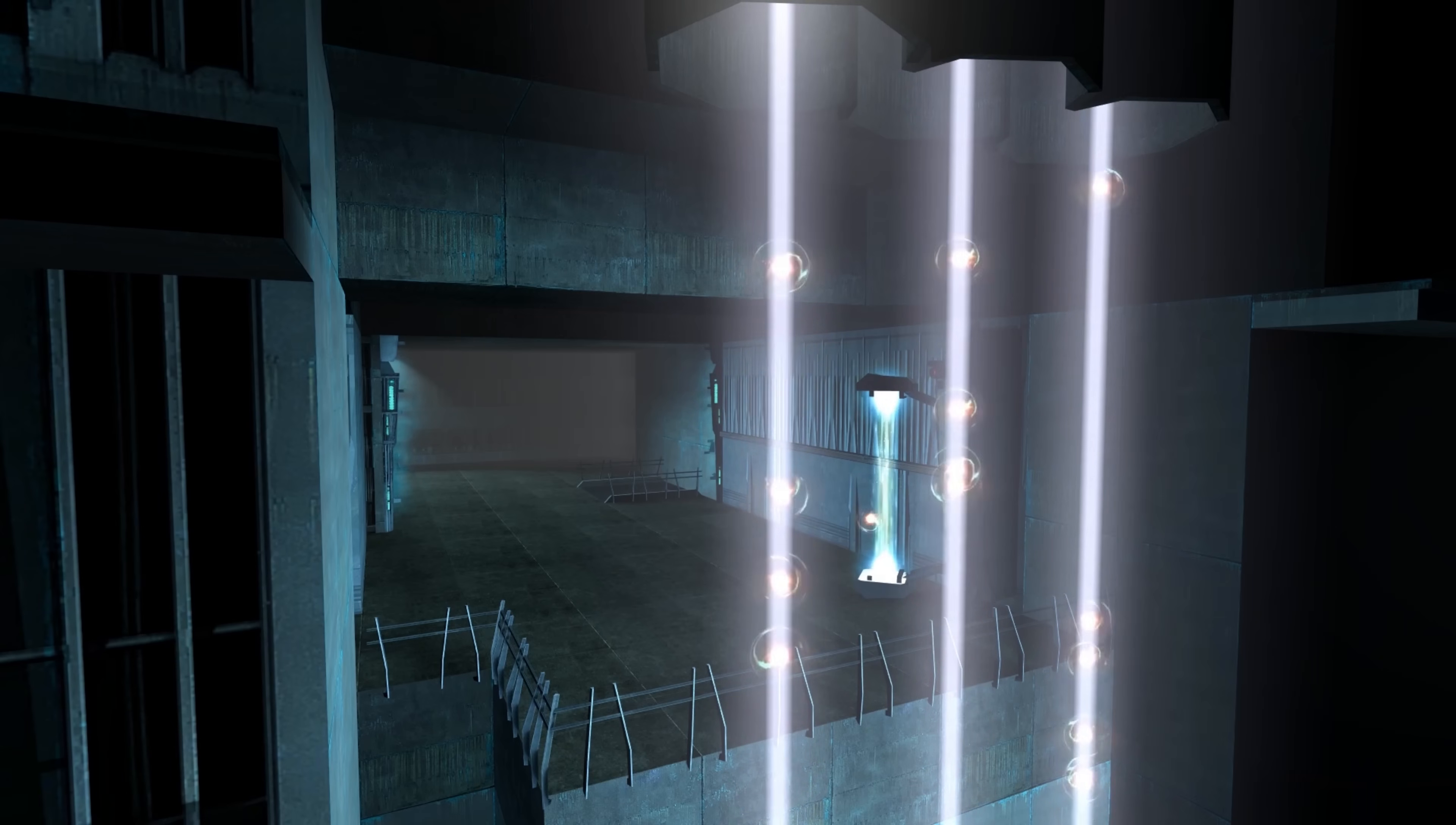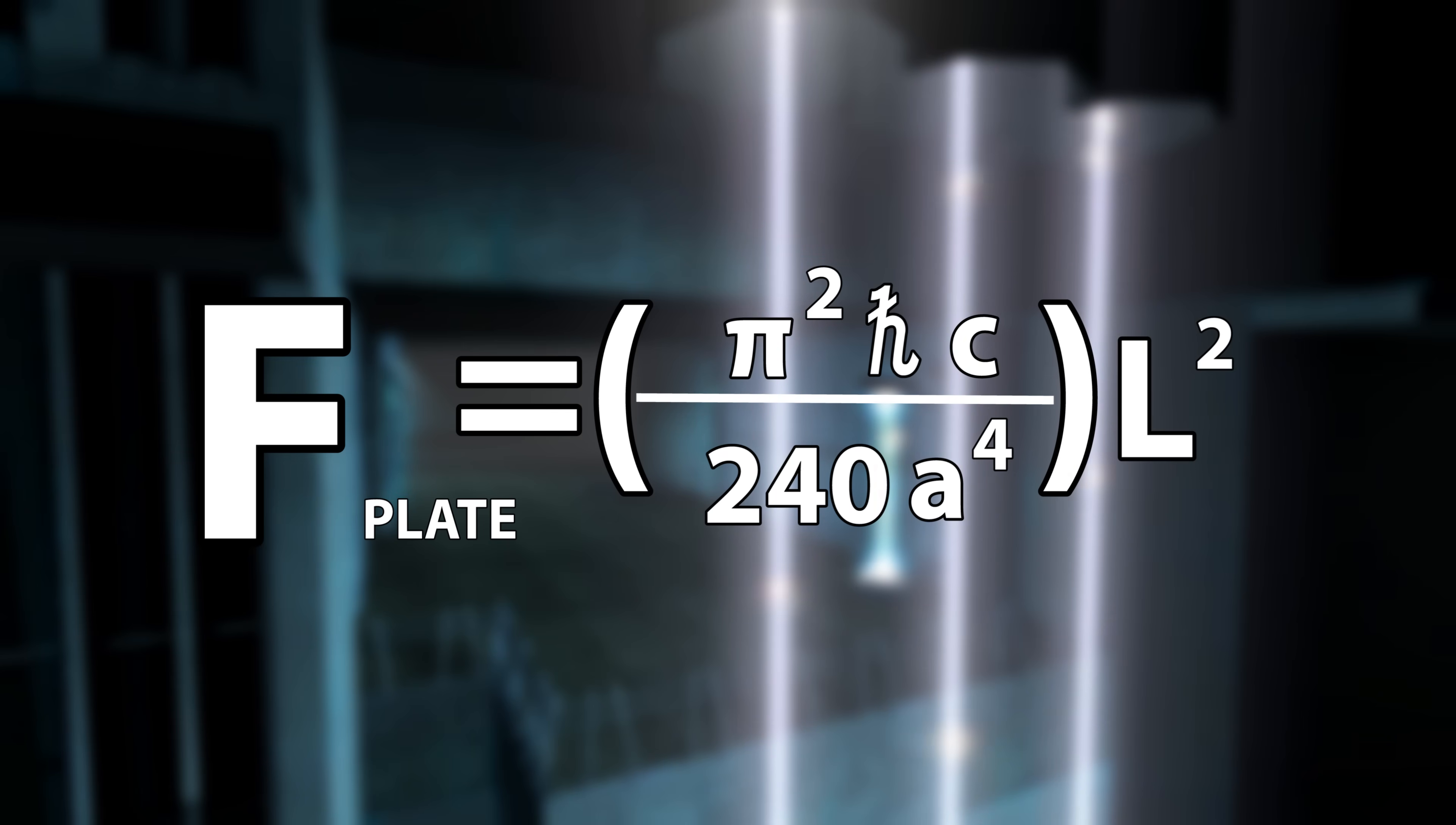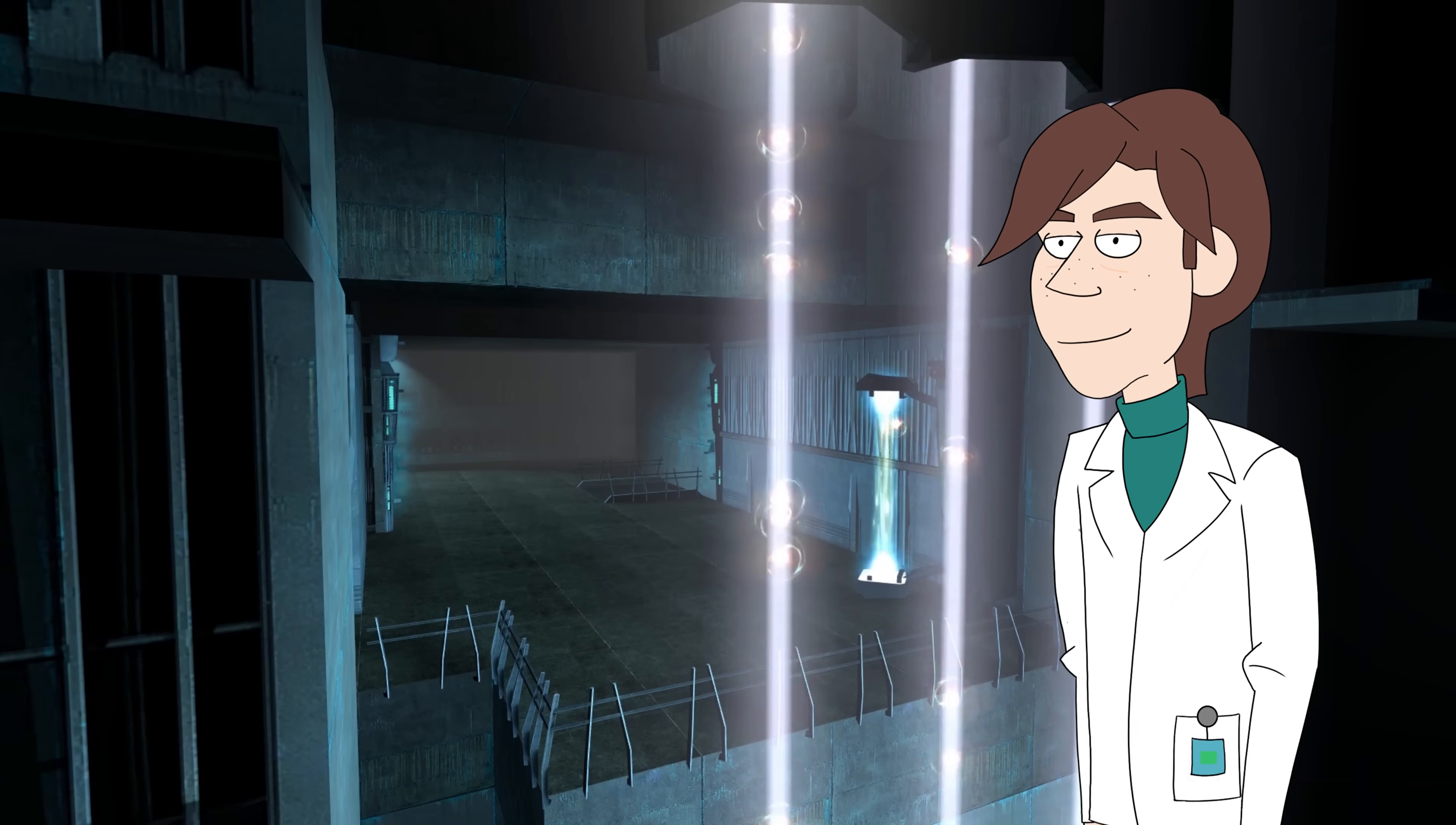the force between the two plates can be described as f equals pi squared times the reduced Planck's constant, h-bar, times c, the speed of light, divided by 240 times a to the fourth, for some separation distance a, all times l squared, for some length of the plate l. Now this seems like a really small force, but it proves that the zero-point energy field, that energy between the two plates, can be manipulated.